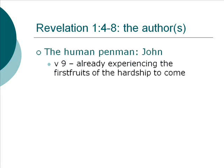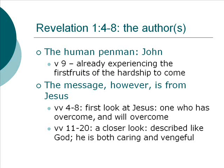John is the human penman of this composition — John to the seven churches that are in Asia, grace to you and peace. We know from verse 9 that John is already experiencing the first fruits of what is to come. He says he is 'your brother and fellow partaker in the tribulation and kingdom and perseverance which are in Jesus,' and was on the island called Patmos because of the word of God and the testimony of Jesus. This is the very thing that will be facing the rest of these people: tribulation and a need for perseverance because of their loyalty.